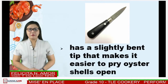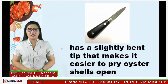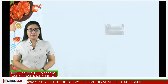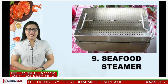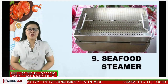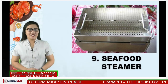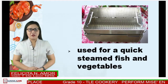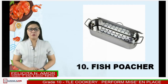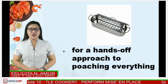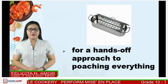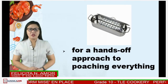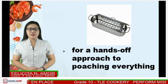Another kitchen tool is the oyster knife — it has a slightly bent tip that makes it easier to pry oyster shells open. Next is the seafood steamer, which is equipment used for quick steamed fish and vegetables. The last is the fish poacher, used for a hands-off approach to poaching everything from fish to beef to vegetables. One definite advantage of poaching is that the food will turn out succulent and tender, which is certainly a desirable outcome for fish.